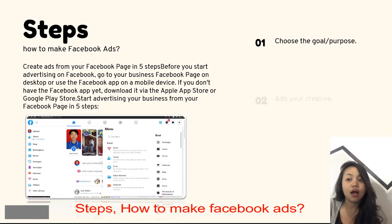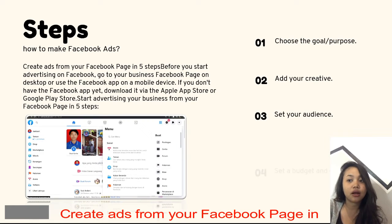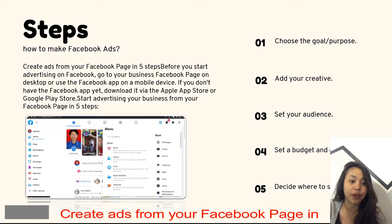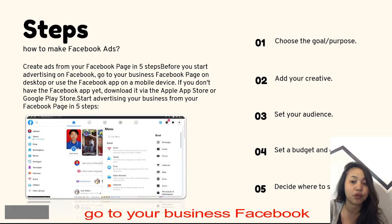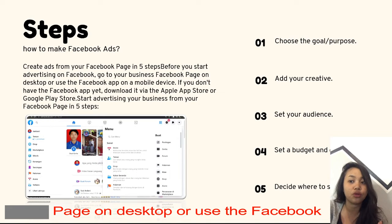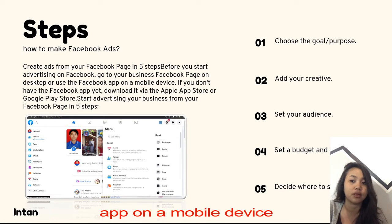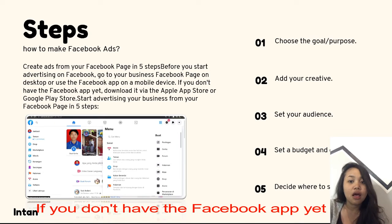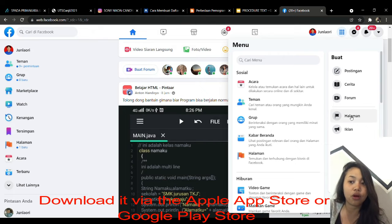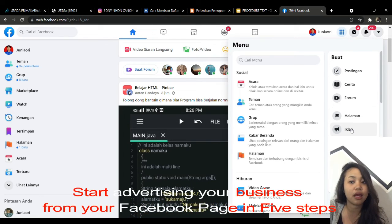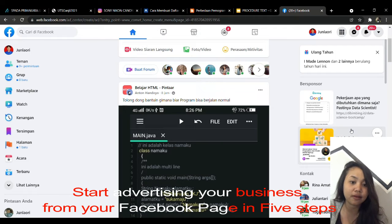How to make Facebook Ads: create ads from your Facebook page in 5 steps. Before you start advertising on Facebook, go to your business Facebook page on desktop, or use the Facebook app on a mobile device. If you don't have the Facebook app yet, download it via the Apple App Store or Google Play Store. Start advertising your business from your Facebook page in 5 steps.